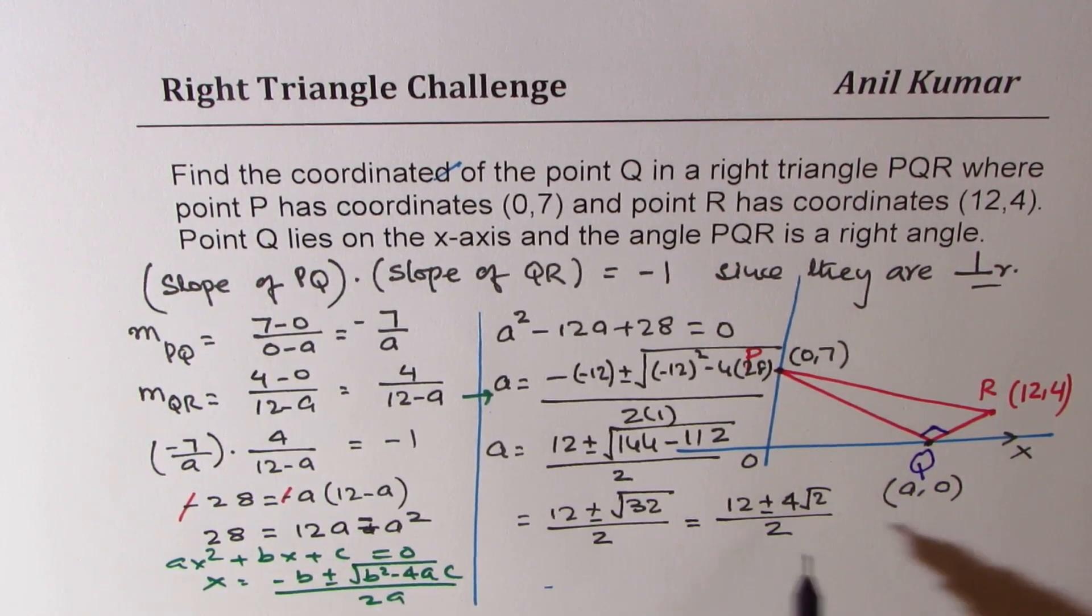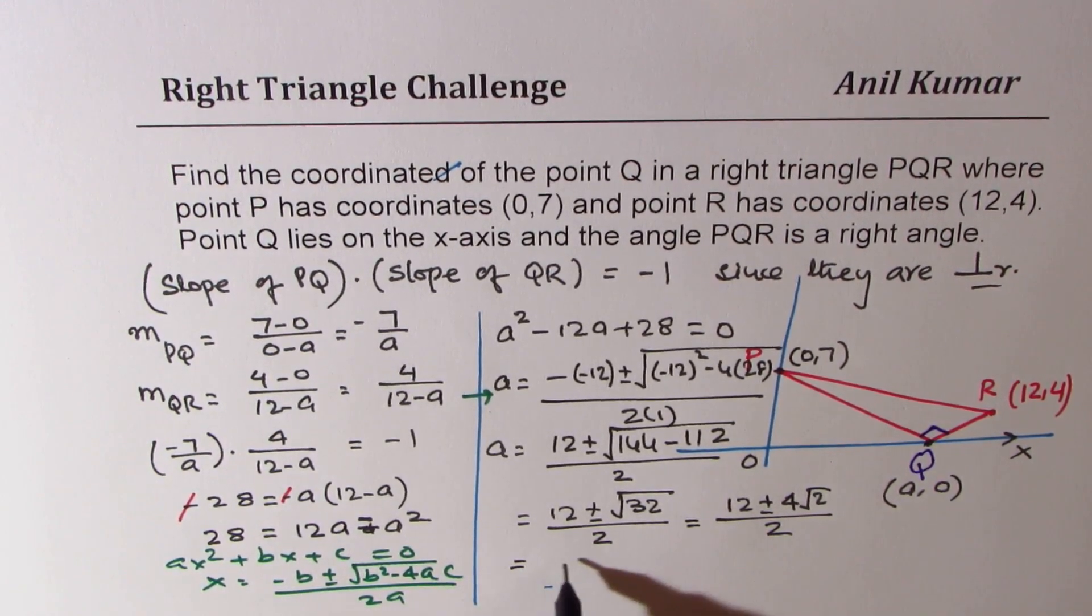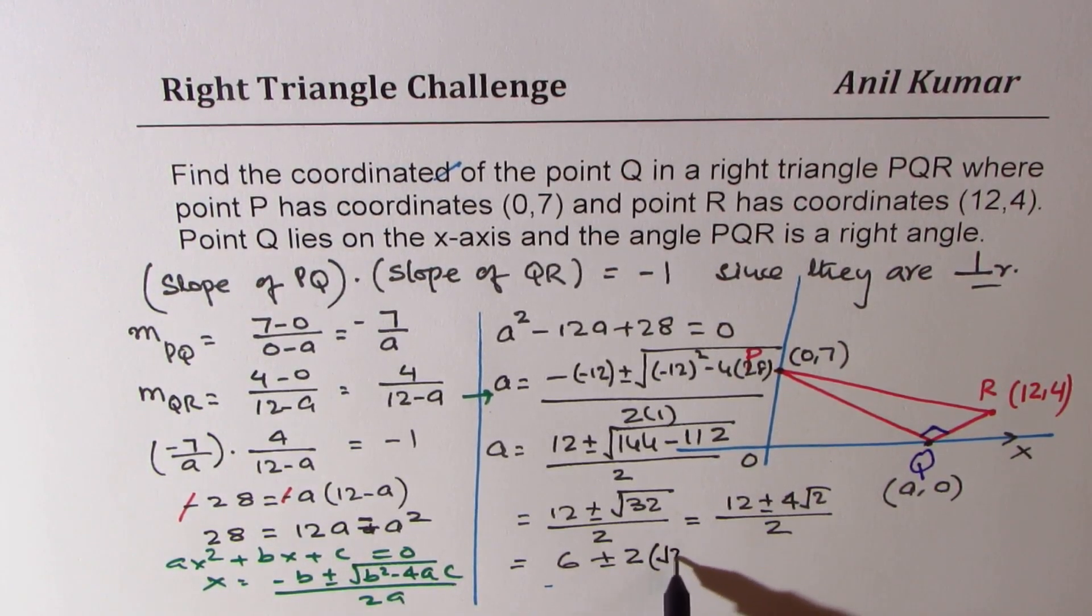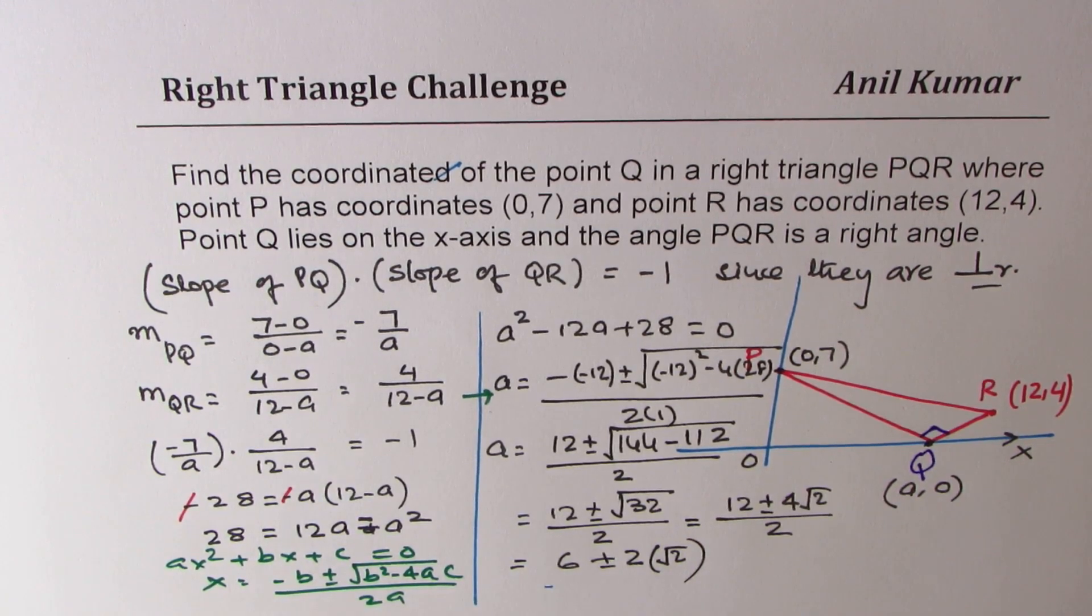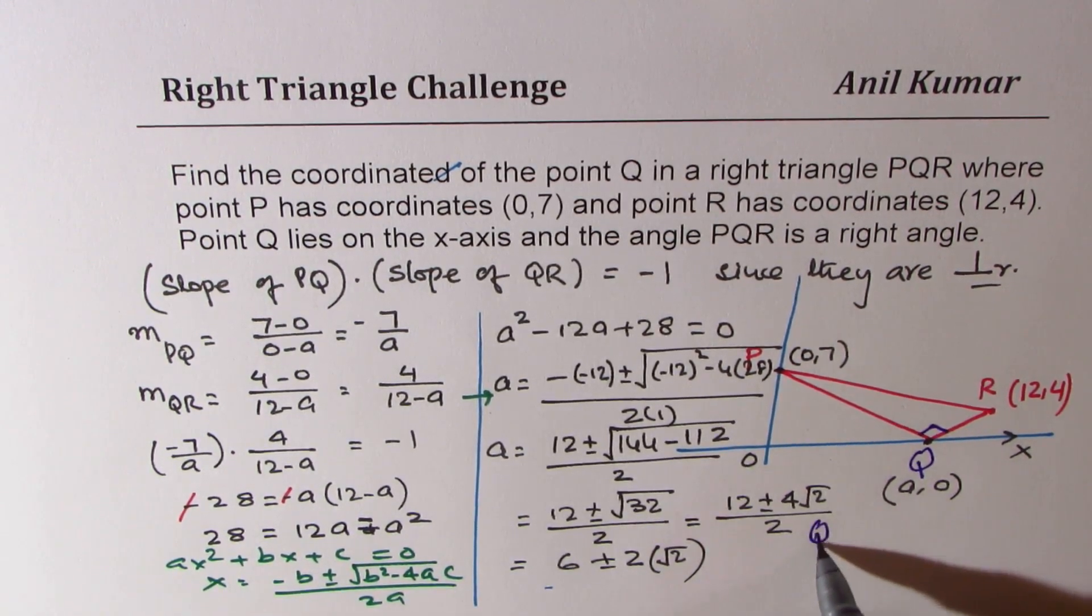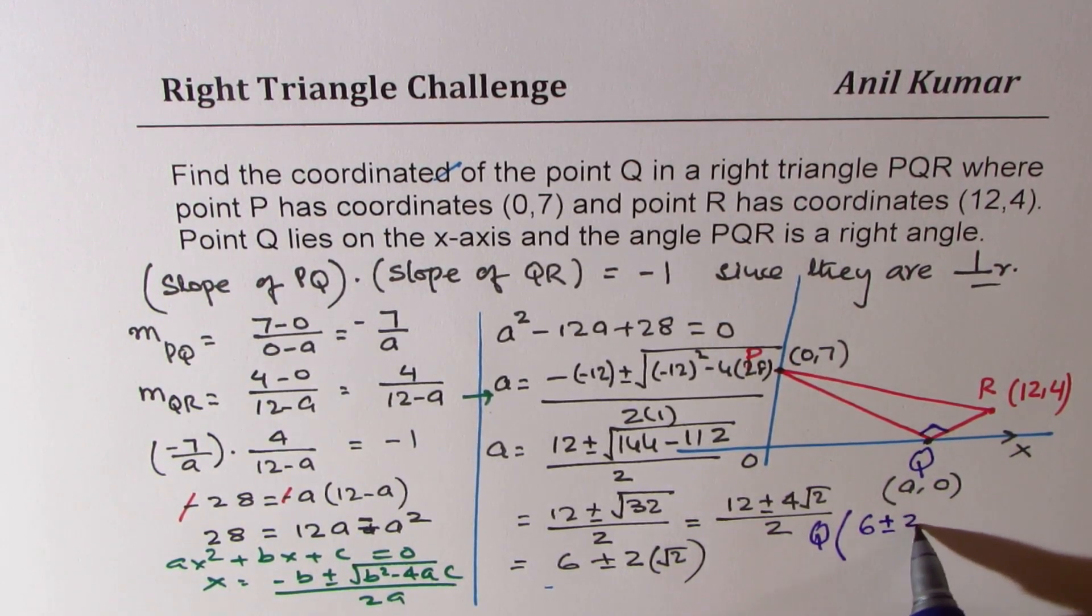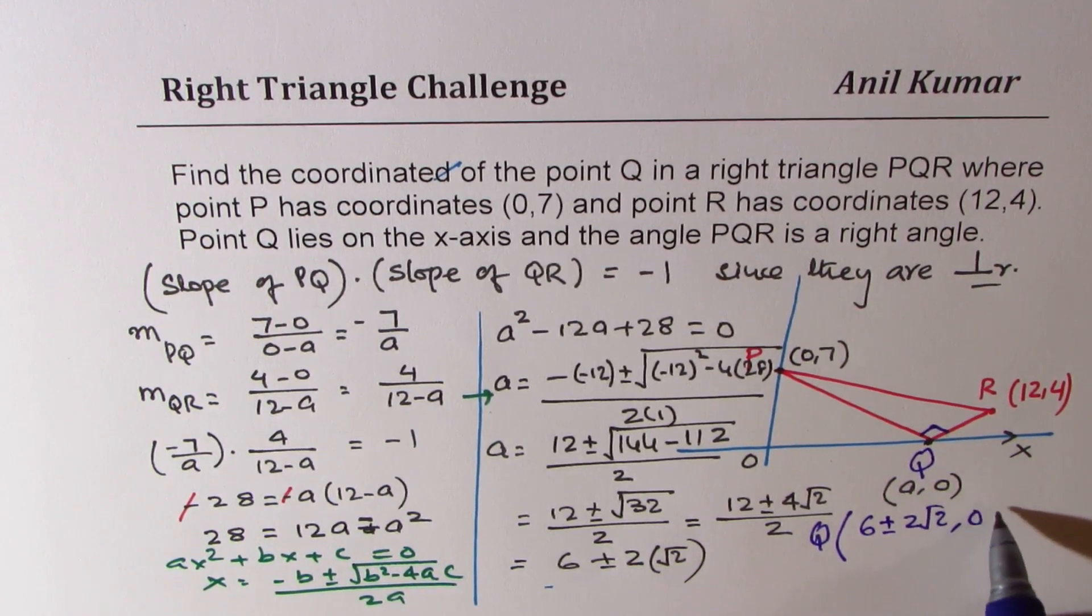Now dividing by 2, you get your solution, which is 6 plus minus 2 square root 2. So that is the solution. So the coordinates of point Q could be 6 plus minus, so there could be two values, 2 square root 2 comma 0.